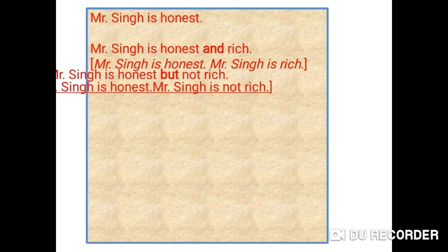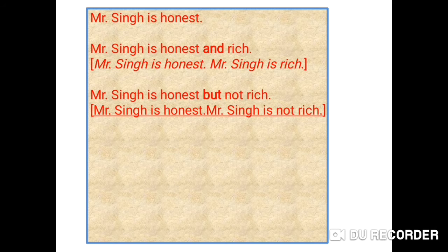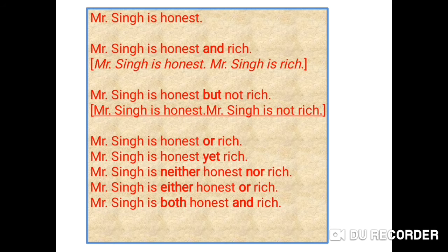Let's see another example. Here we add 'but'. The first sentence shows additional positive information about Mr. Singh, while the second tells us about contradictory ideas about Mr. Singh. Means we can write the same sentence in two ways. Now we can add other connectors and make more sentences — suppose 'or', 'yet', 'neither nor', 'either or', 'both and', or 'as well as' — and we can frame many sentences like these.